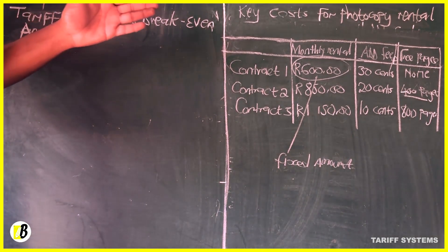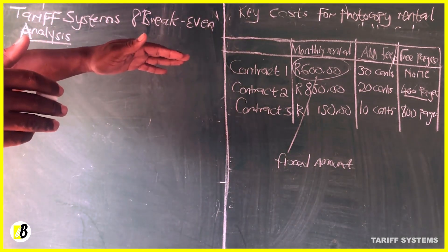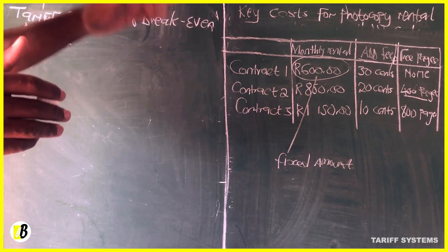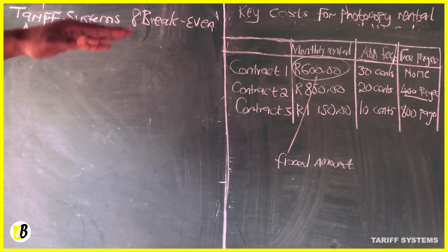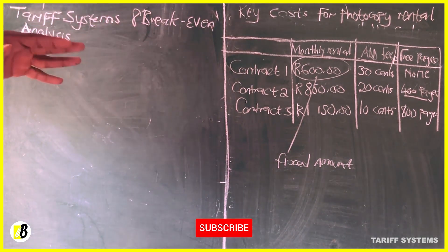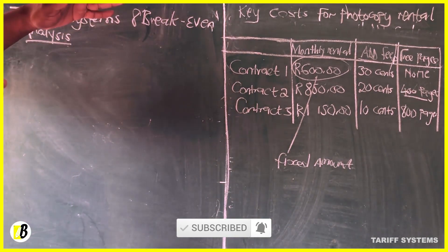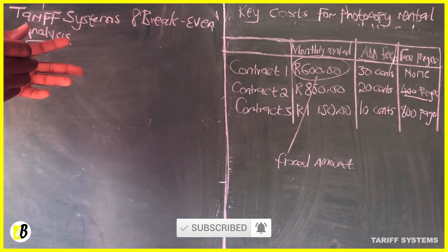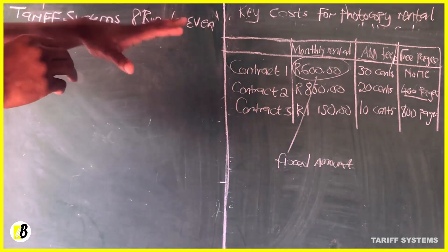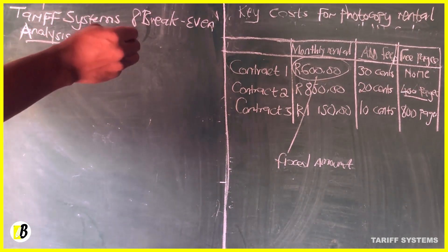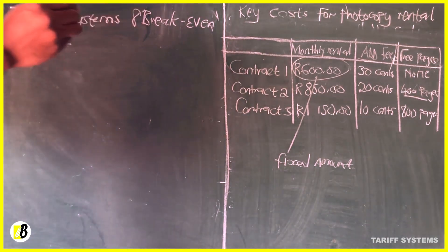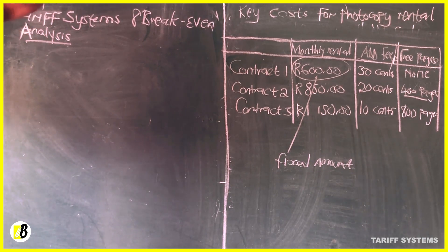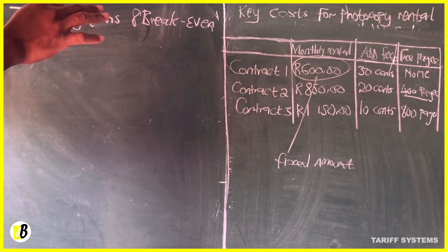You'll be supplied with various contracts. If you take a look at this table right here, the description is based on photocopy rental. You can see there are various contracts: contract number one, number two, and number three. For contract number one, the monthly rental fee is 600 rand, the additional fee is 30 cents per page, and there are no free pages.